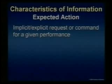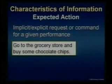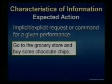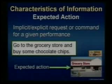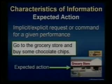Remember our challenge: that we cannot defend against materialism. A third characteristic of information is expected action — an implicit or explicit request or command for a given performance. For example: go to the grocery store and buy some chocolate chips. The expected action is that someone will go to the grocery store and buy some chocolate chips. Whether that is carried out or not is irrelevant, but there is an expected action in information. So we have a code, a meaning, and an expected action.